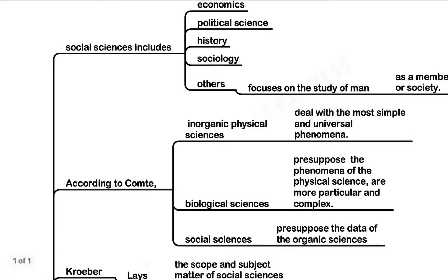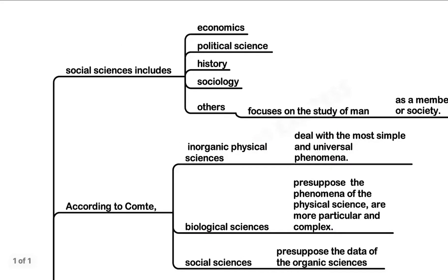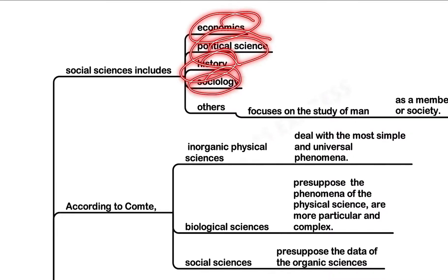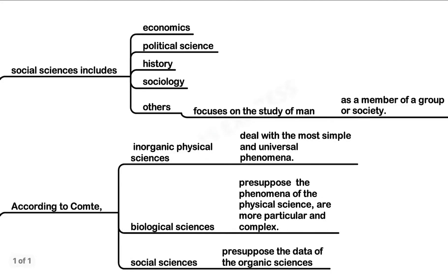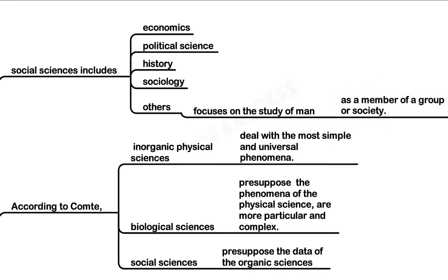Beginning with the relationship of anthropology and social science — social science includes economics, political science, history, sociology, and others. It focuses on the study of human society concerning human behavior and culture. Its focus is the study of man as a member of a group or society. It is an academic discipline instructed at numerous levels of education and researched at university level.